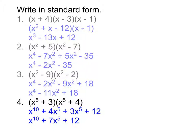Looking at these answers, notice where the numbers in our answer are coming from. For number two, the negative 2 and the minus 35 — see how they connect to the original numbers in the binomials. Five plus negative 7 equals negative 2, and 5 times negative 7 equals negative 35. So our two numbers added to the middle number and multiplied to the last number.